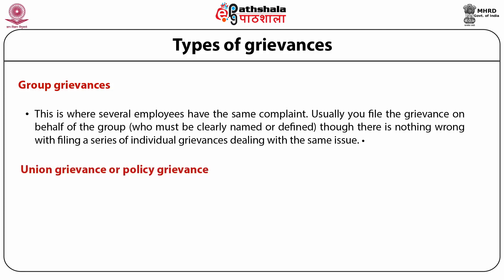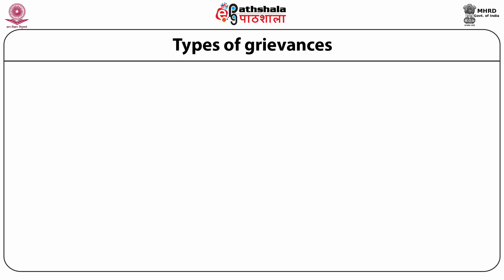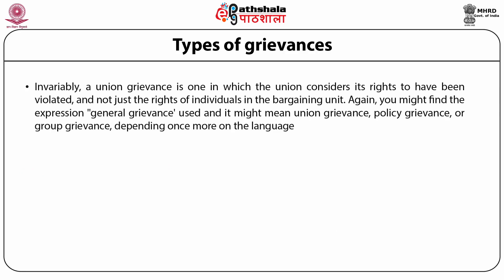Union or policy grievances: Exactly what your rights are and what these grievances are called depends on the language used in the contract. These two types of grievances usually mean the same thing. A union grievance is filed by the union on behalf of a group of individuals, the whole bargaining unit, or on behalf of an individual who refuses to file it. It is one in which the union considers its own rights to have been violated, not just the rights of individuals. The expression 'general grievance' may mean union grievance, policy grievance, or group grievance depending on the contract language.